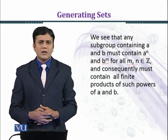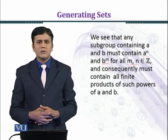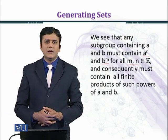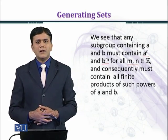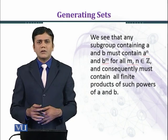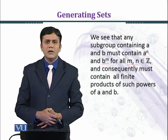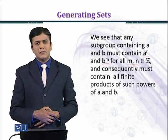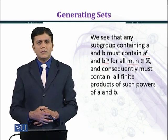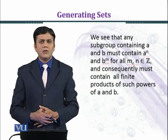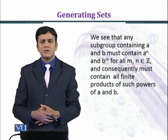اب یہاں پر ہم دیکھنا چاہ رہے ہیں کہ اگر ہمارا group ایک کے بجائے دو یا دو سے زیادہ elements سے جنریٹ ہو رہا ہے — جیسے ایک element B بھی ہے جس سے group جنریٹ ہو رہا ہے — تو تمام A اور B کے products بھی آئیں گے۔ وہ بھی closure property سے group G کو belong کریں گے، اور A کی تمام powers بھی G کو belong کریں گی اور B کی تمام powers بھی G کو belong کریں گی۔